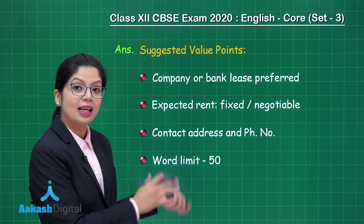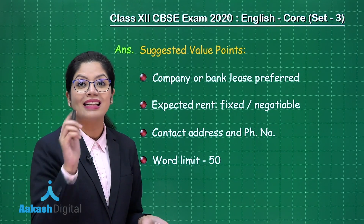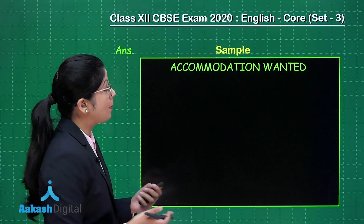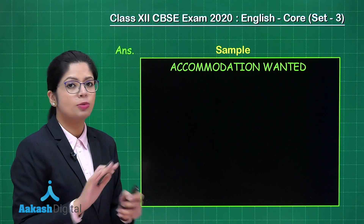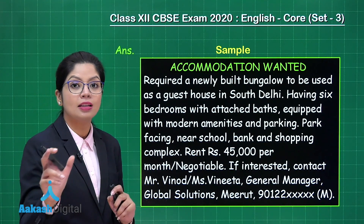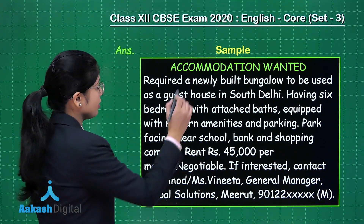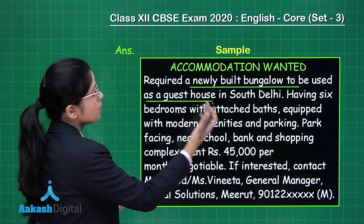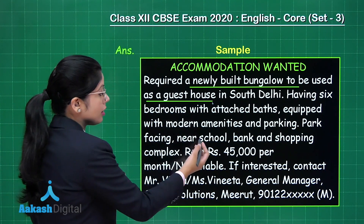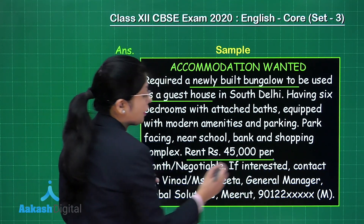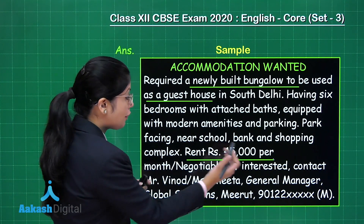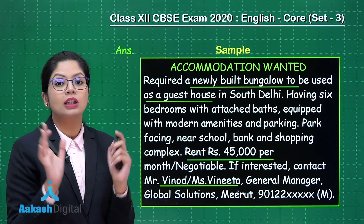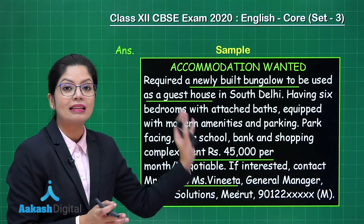The word limit is precisely 50 words — do not go beyond that, and keep a check on the writing format. Sentences are not part of an advertisement; you have to use phrases or clauses only. The sample begins with the heading 'Accommodation Wanted' in the middle. Required: a newly built bungalow to be used as a guest house in South Delhi. Having six bedrooms with attached baths, equipped with modern amenities and parking. Park facing, near school, bank, and shopping complex. Rent: Rs. 45,000 per month or negotiable. If interested, contact Mr. Vinod or Ms. Vinita, General Manager, Global Solutions, Meerut — with contact number. Do not create sentences, as that will cost you marks; phrases are the only thing permitted.